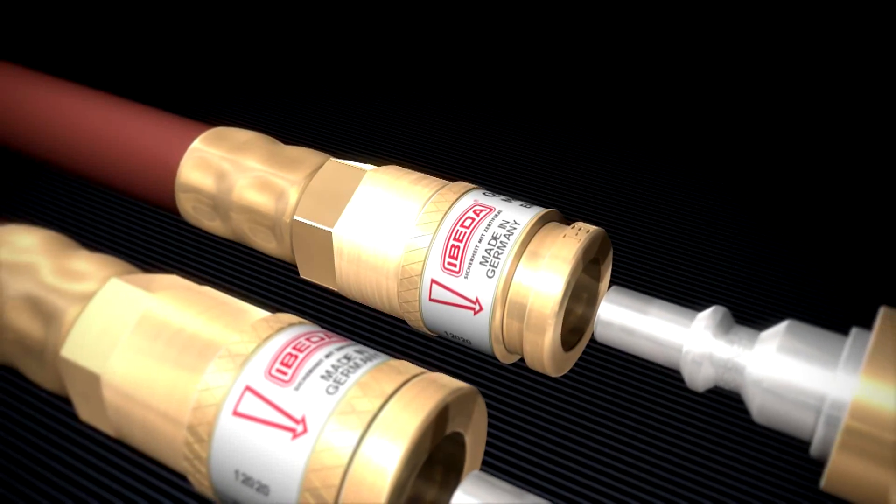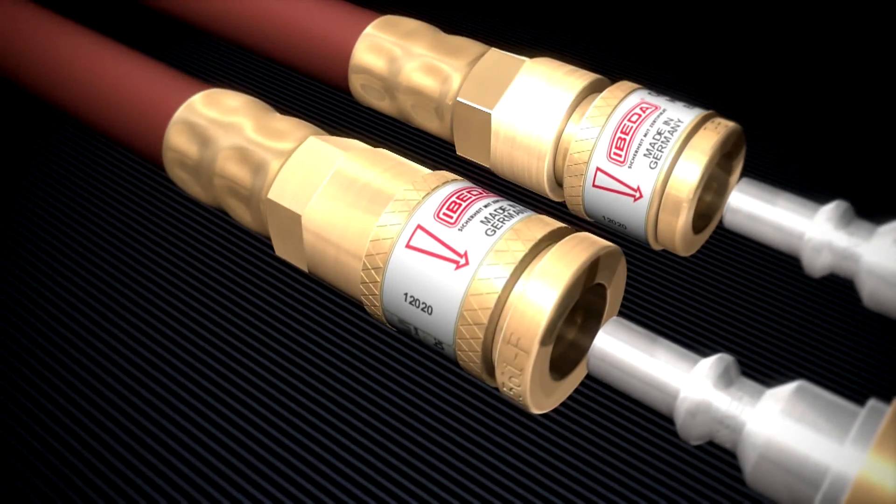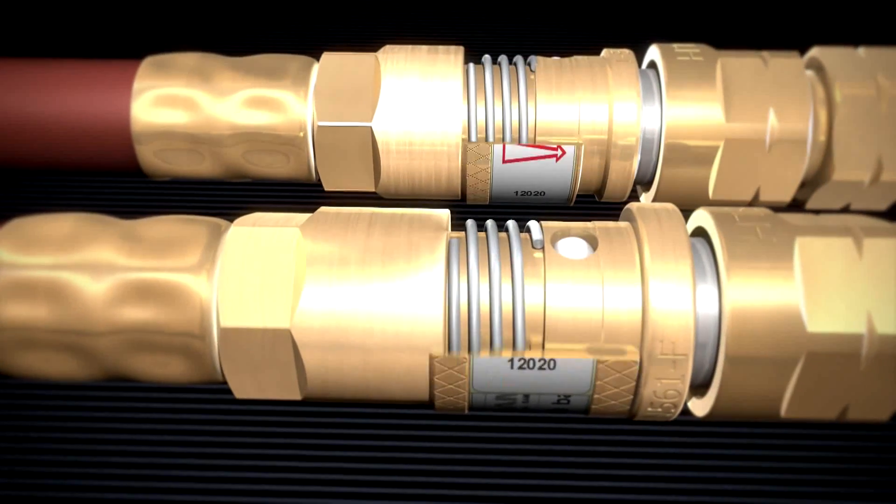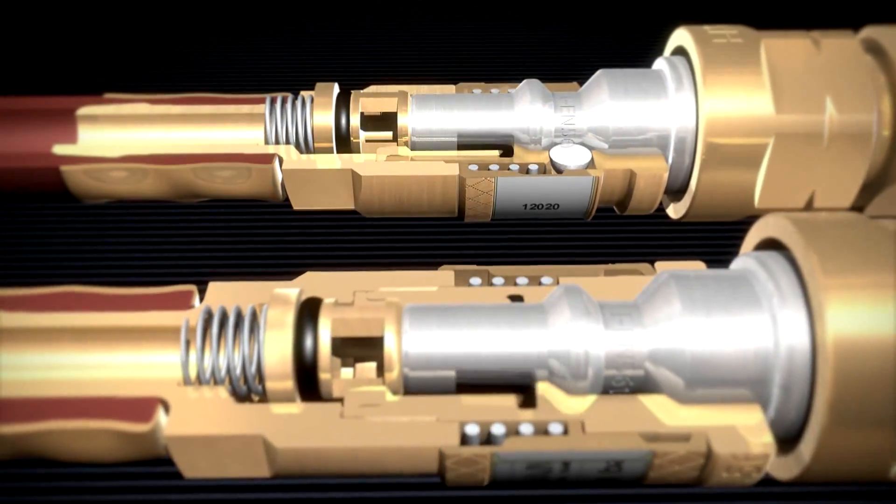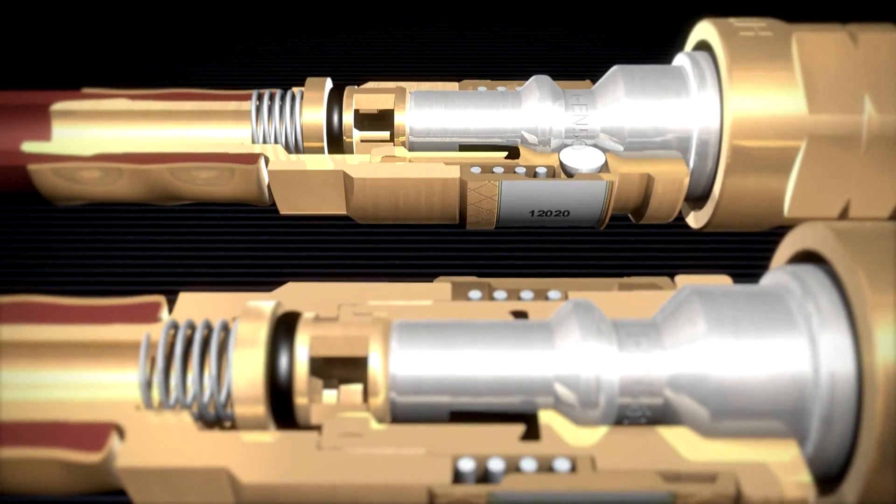EBITDA hose couplings are also available as push-or-pull versions. The construction of the coupling bodies is absolutely identical, but the handling during the coupling and uncoupling varies depending on the wishes of the user.